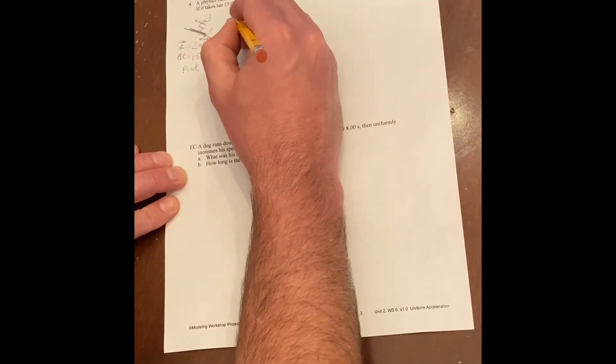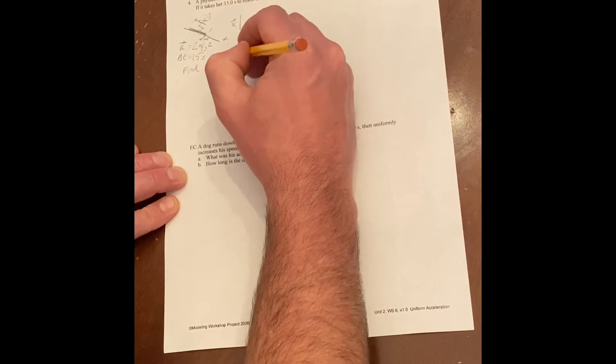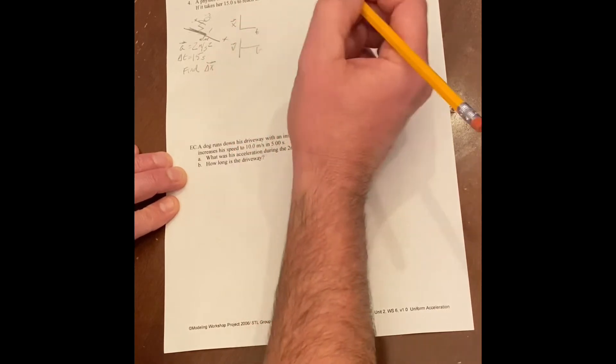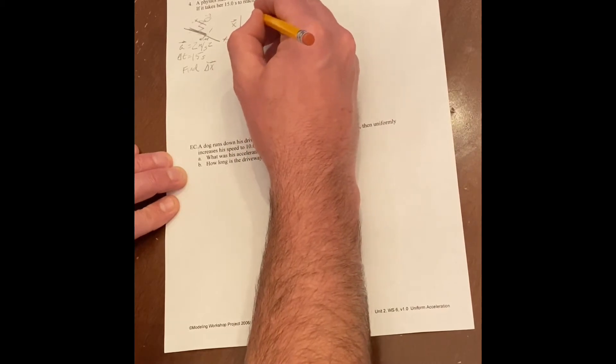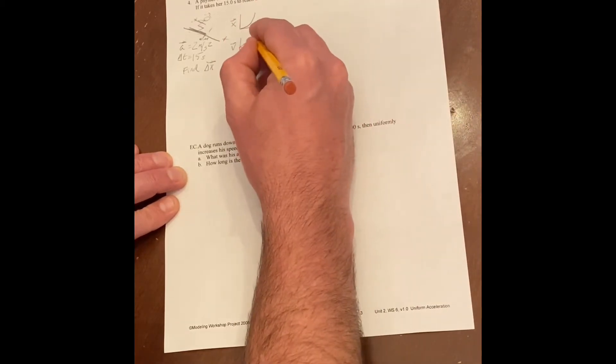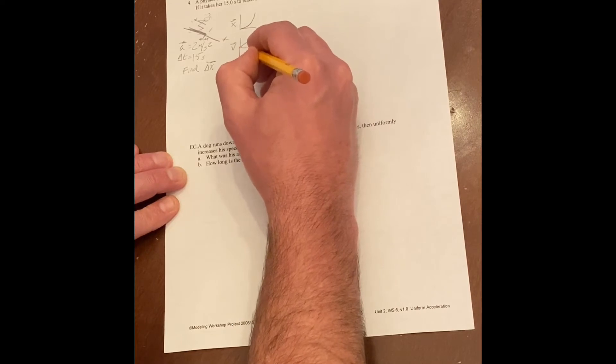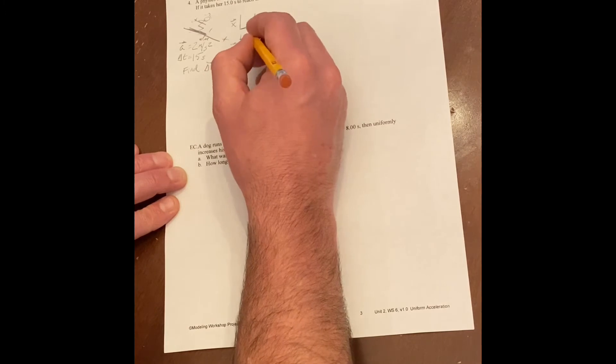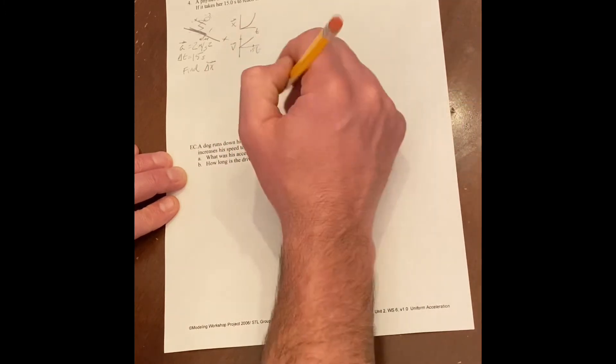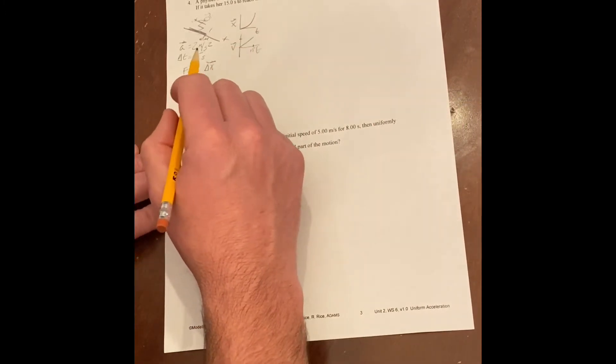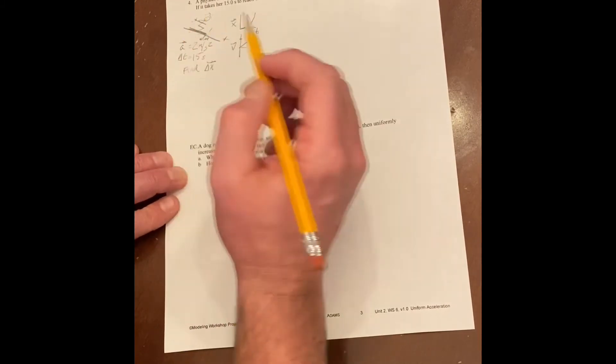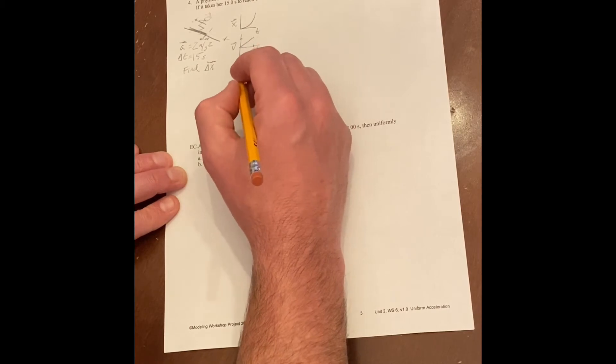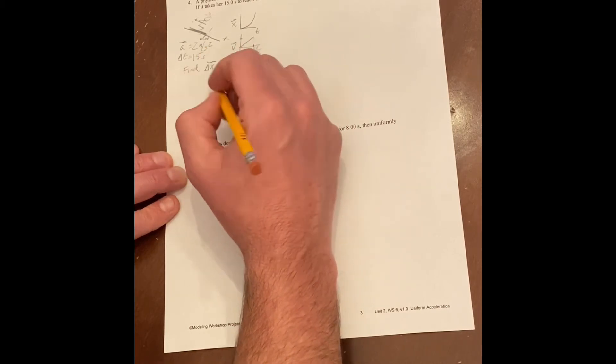We were asked to sketch out position versus time and velocity versus time graphs for this. So if we've got somebody starting at rest and speeding up in a positive direction, we're just going to have that. Our velocity versus time graph is here, which 15 seconds is this value, but we don't know the maximum velocity. We could calculate it, I guess, if we know the rate of acceleration. So we could go ahead and figure that, figure out the final velocity from the acceleration.